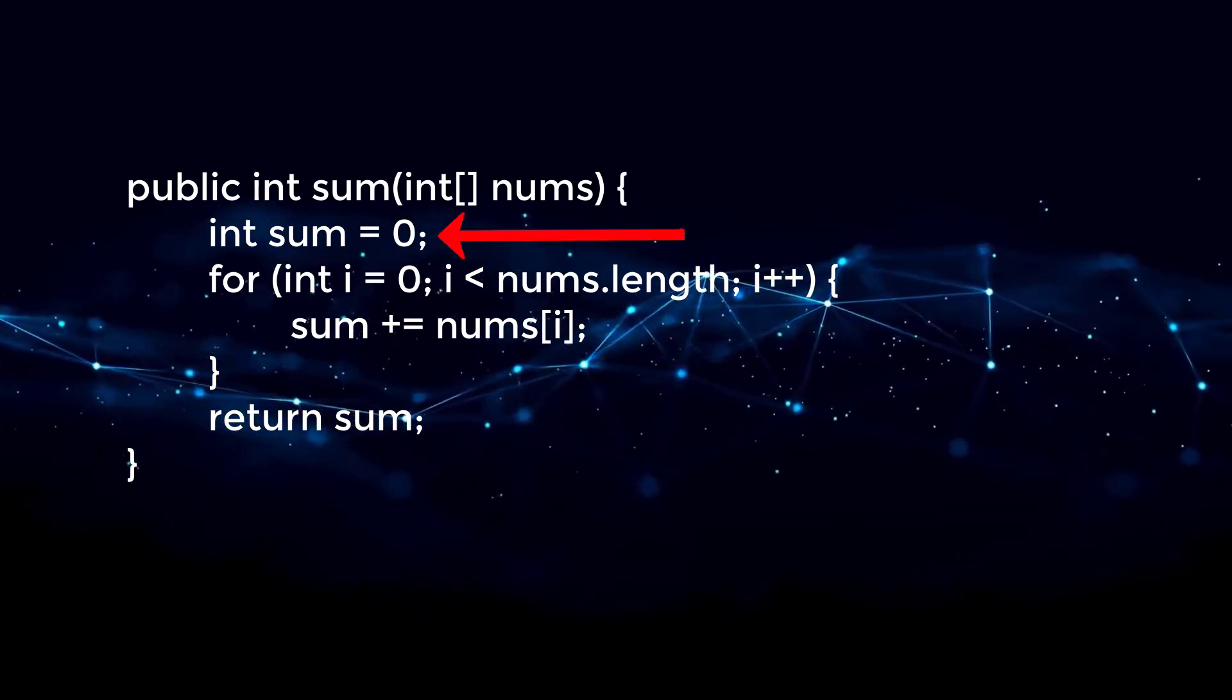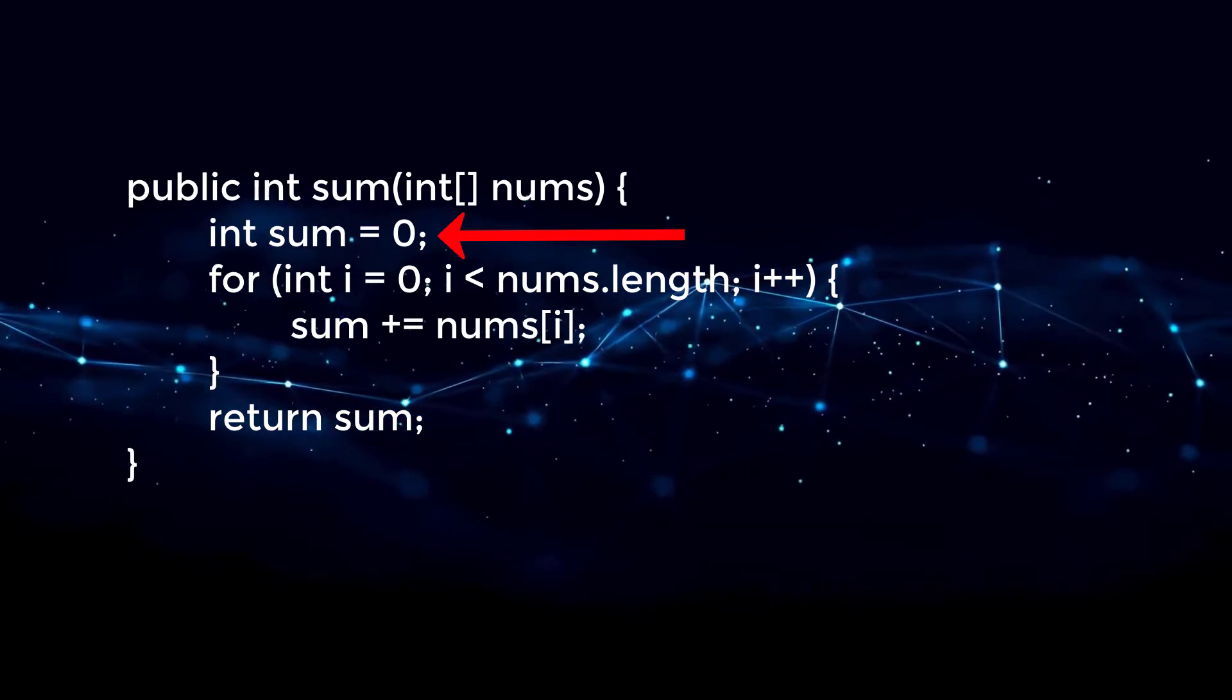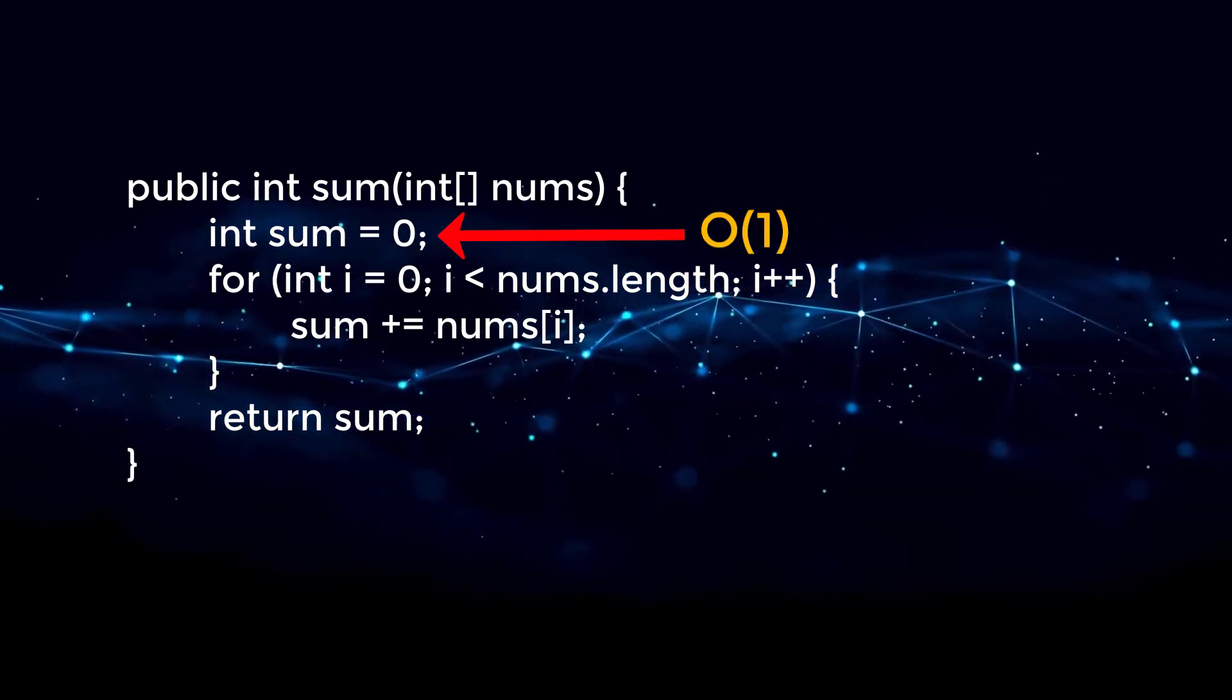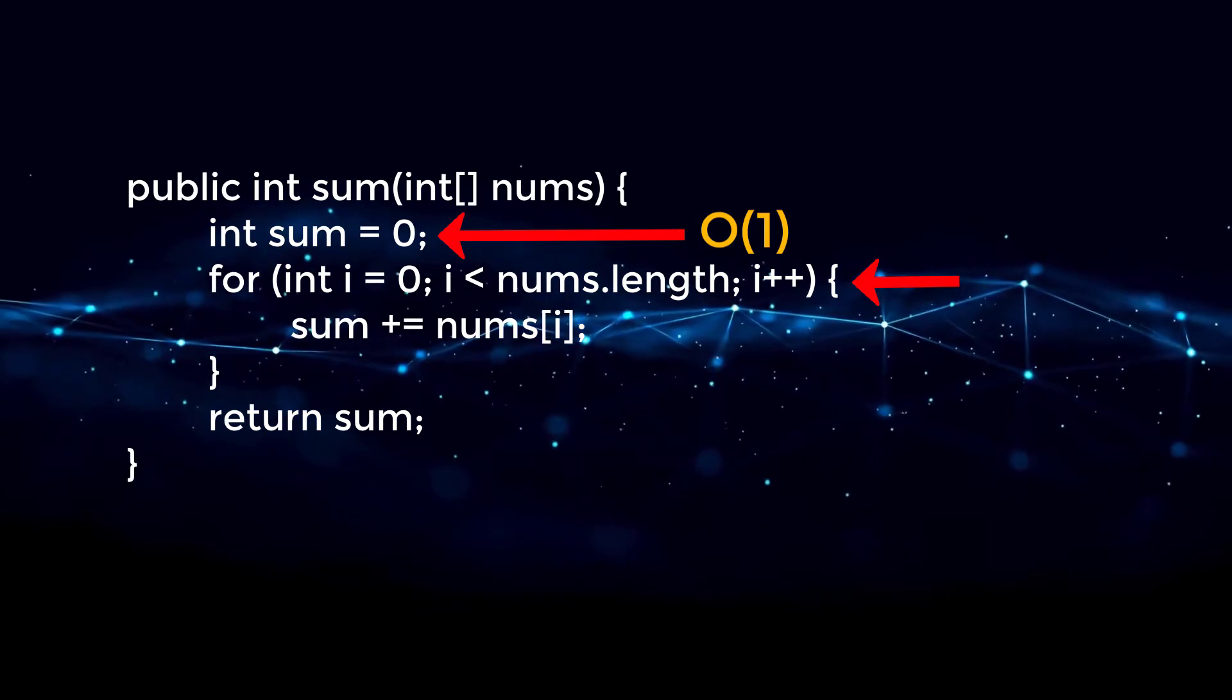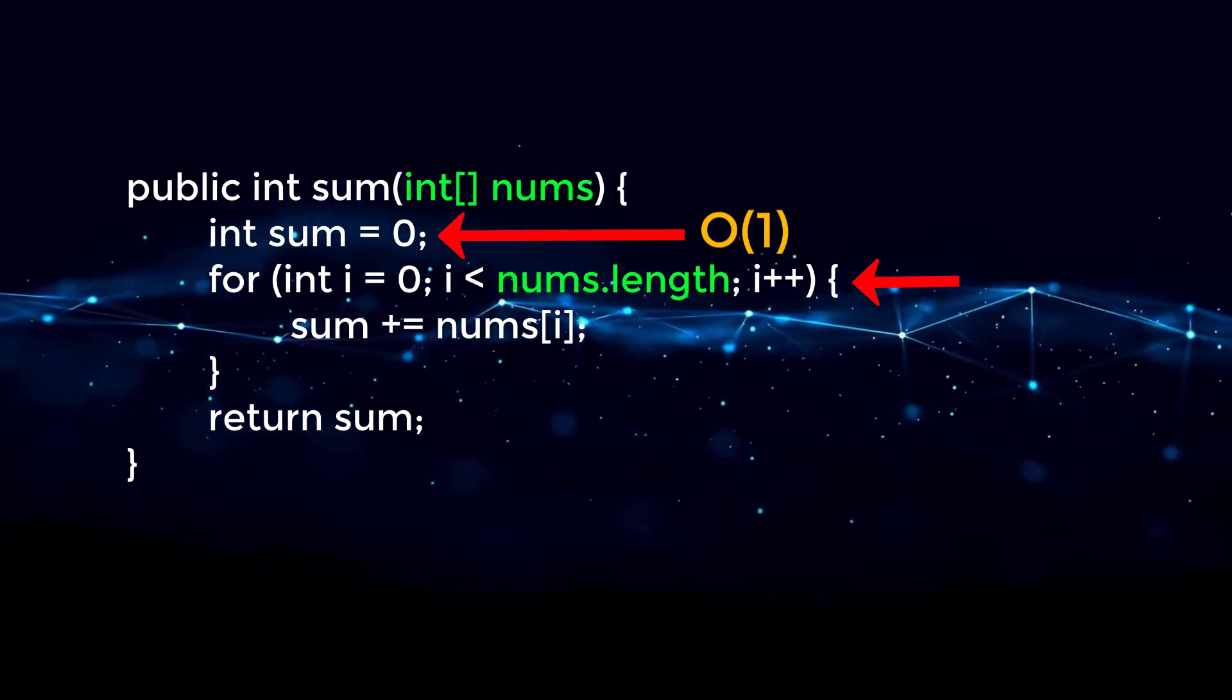Once again, this is unaffected by our input, so we can consider this constant. However, in the second line, we are looping over the entire length of our array.